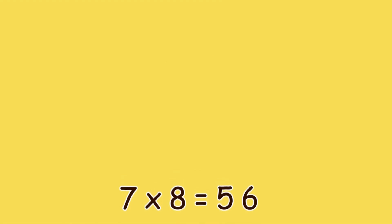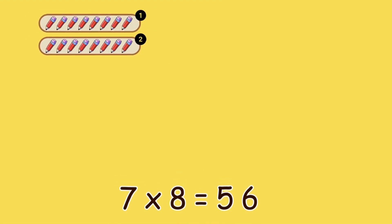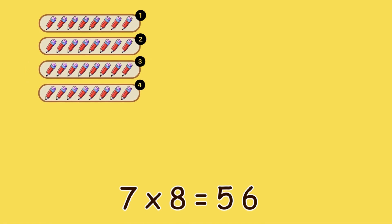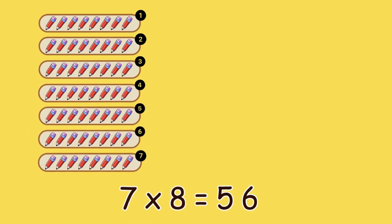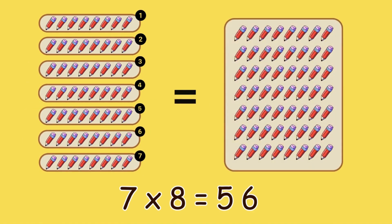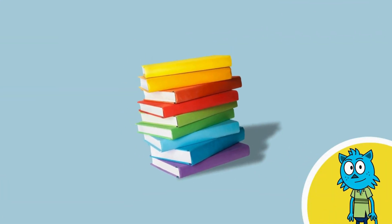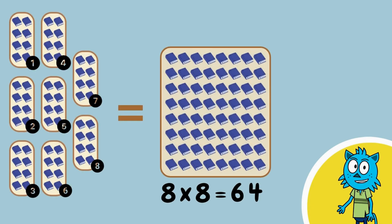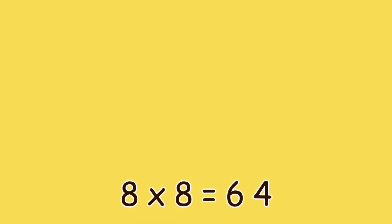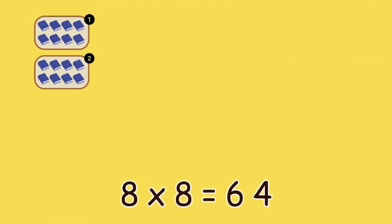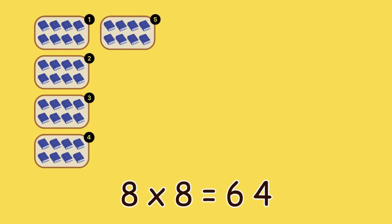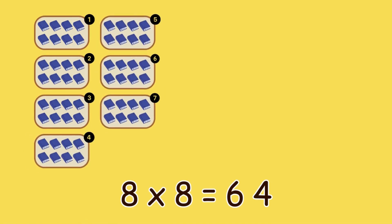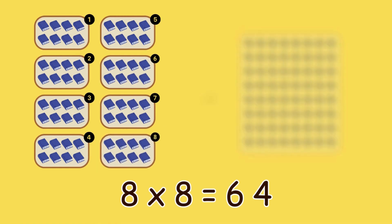Seven groups of eight pencils equals fifty-six pencils. Seven times eight — one, two, three, four, five, six, seven — and eight times eight — one, two, three, four, five, six, seven, eight — is sixty-four.